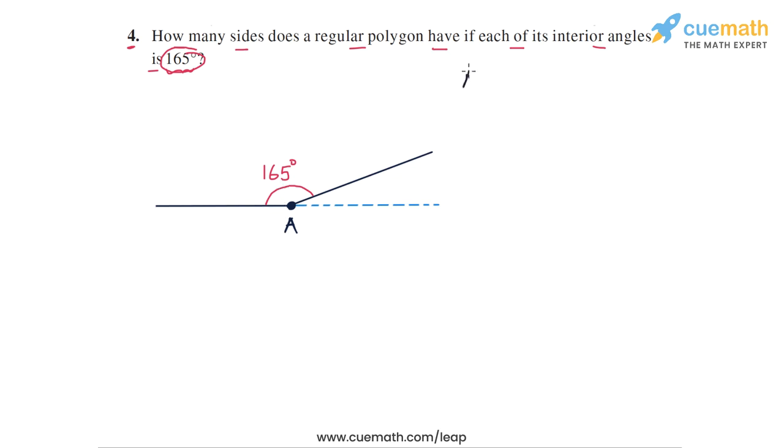Let's assume that the number of sides of the polygon, which we have to find, is equal to n. I have drawn one of the n vertices, which is this point A, and we can see that the interior angle at point A is 165 degrees. Each of the interior angles will be equal to 165 degrees because the polygon is a regular polygon.